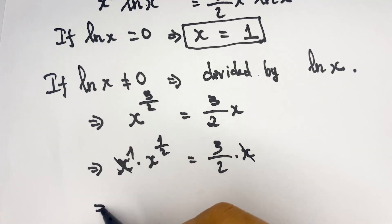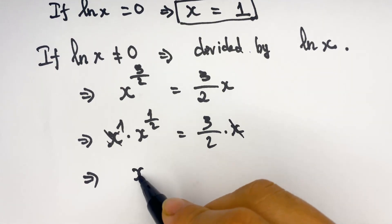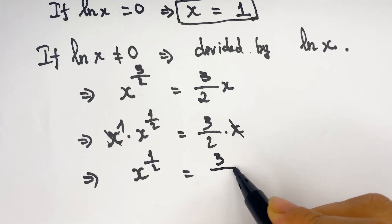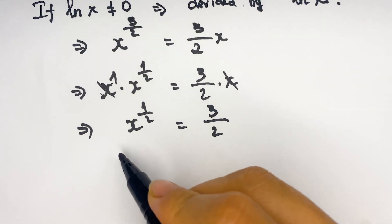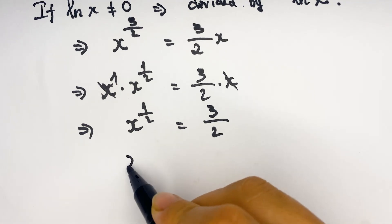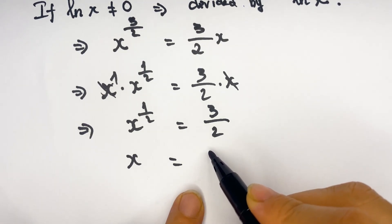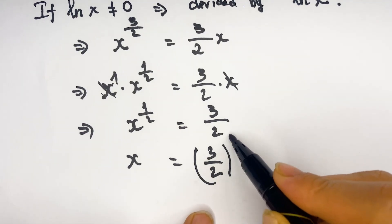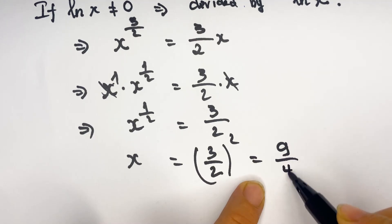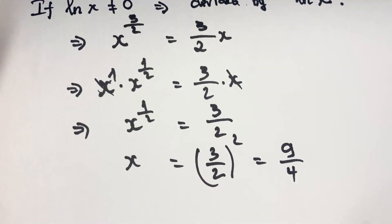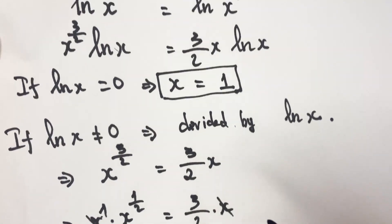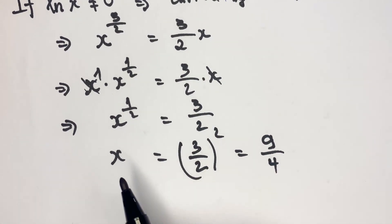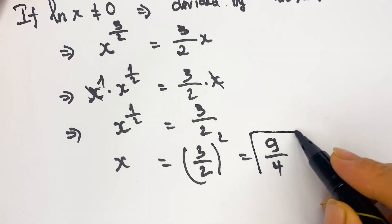So we get x^(1/2) equals 3/2, and squaring both sides gives x equals 9/4. Therefore x equals 9/4 is the second solution.